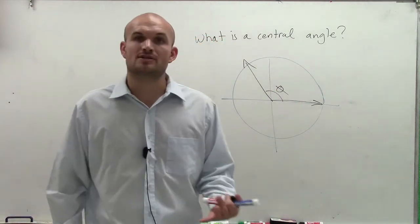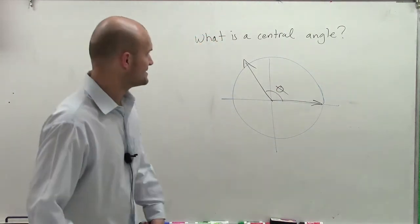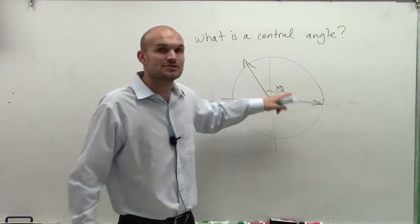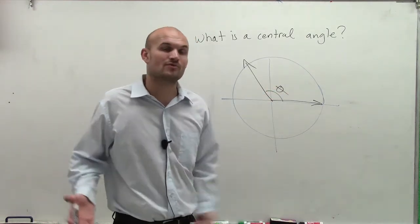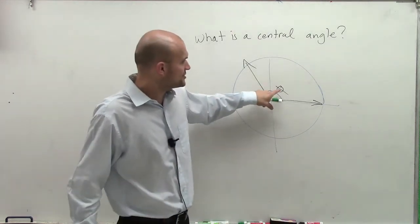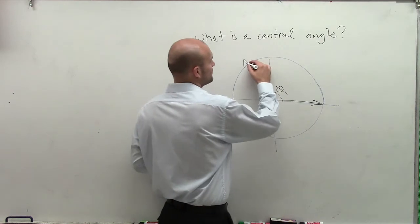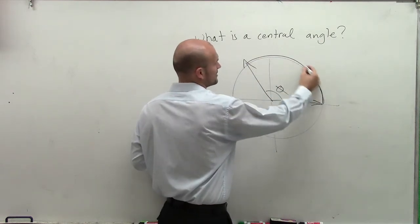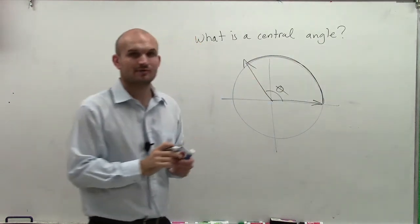Now, the important thing to notice about the central angle is the measure of our central angle, and especially when we're going to talk about radians, because that's why we need to know about central angle in this course. The measure of this is going to be equal to our arc measurement in terms of radians.